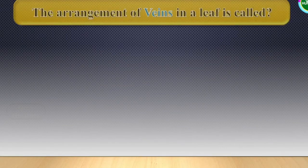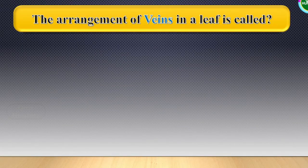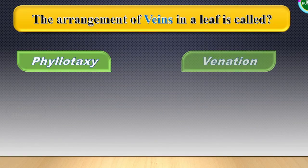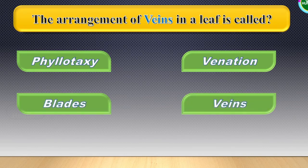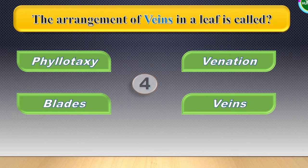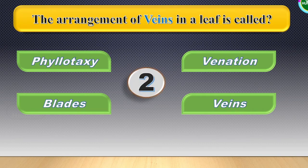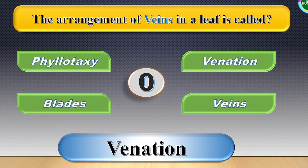Next question: The arrangement of veins in a leaf is called. The options are visible in the screen. Your time starts now. The correct answer for this one is venation.